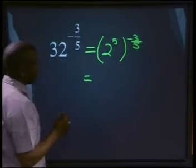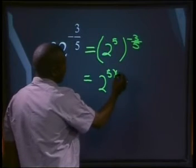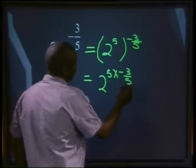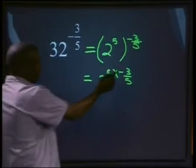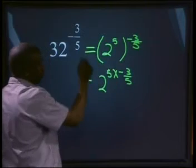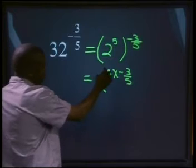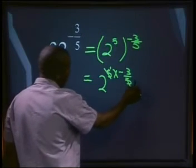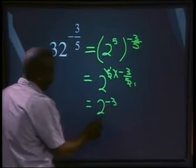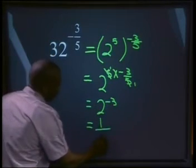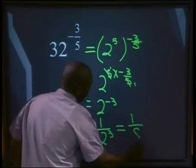This will be the same as 2 to the power of 5 multiplied by minus 3 over 5. Now we have to be careful of the negative exponent. Remember, if we have a negative exponent, it will be 1 over the number to a positive exponent. First, let's cancel out: 5 goes into 5 once, into 5 once. That will give us 2 to the power of minus 3, which will be the same as 1 over 2 to the power of 3, and that equals 1 over 8.